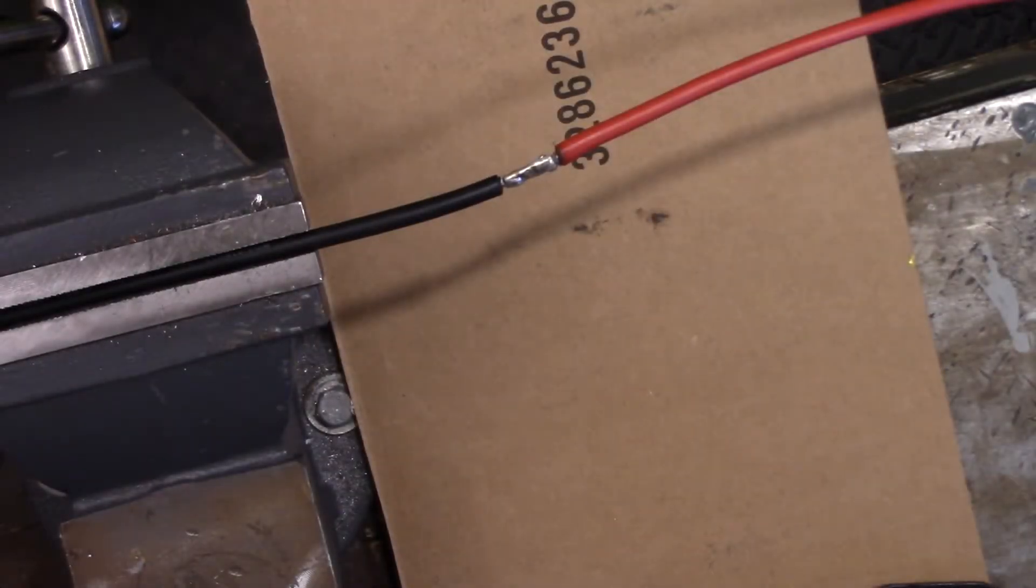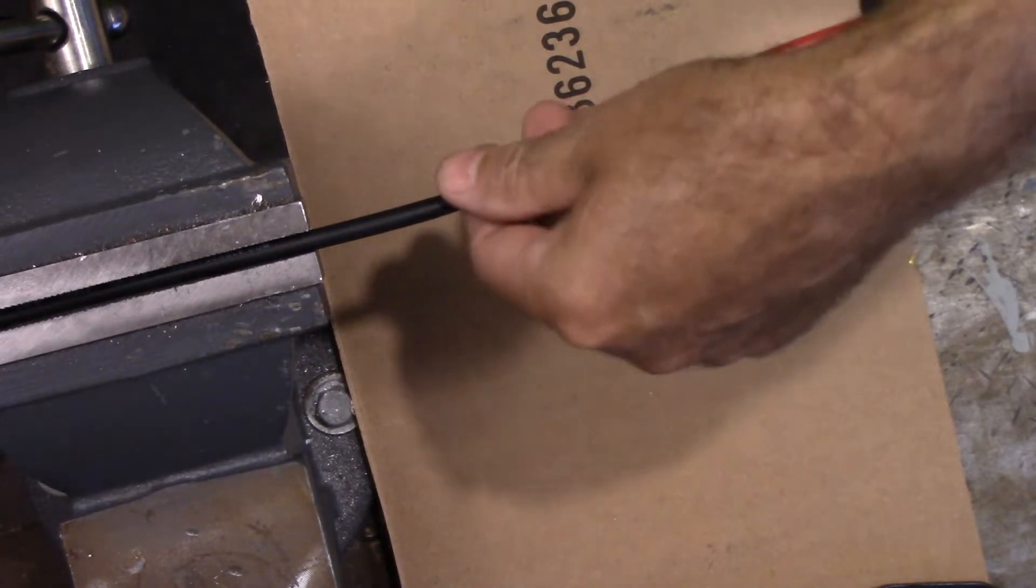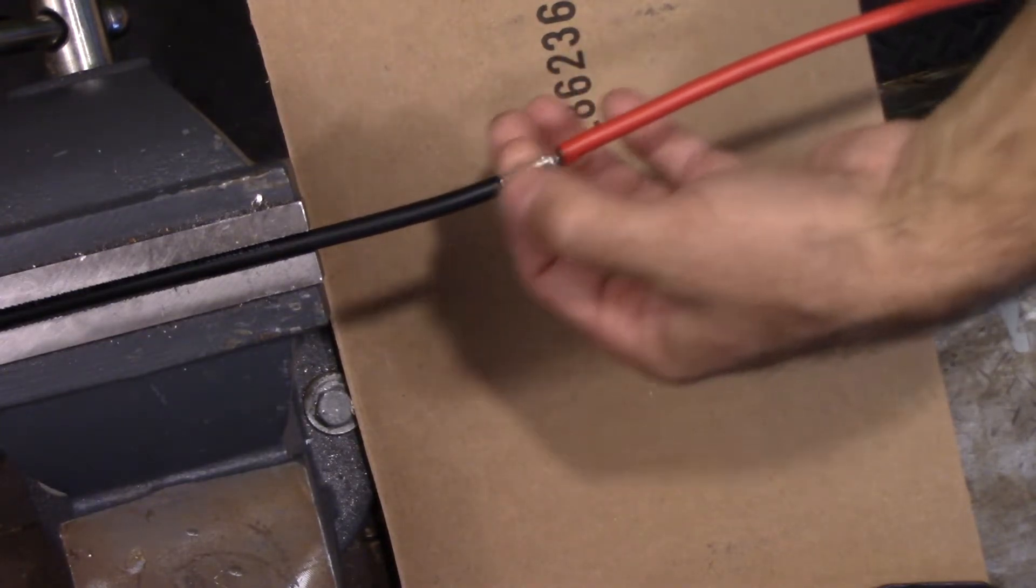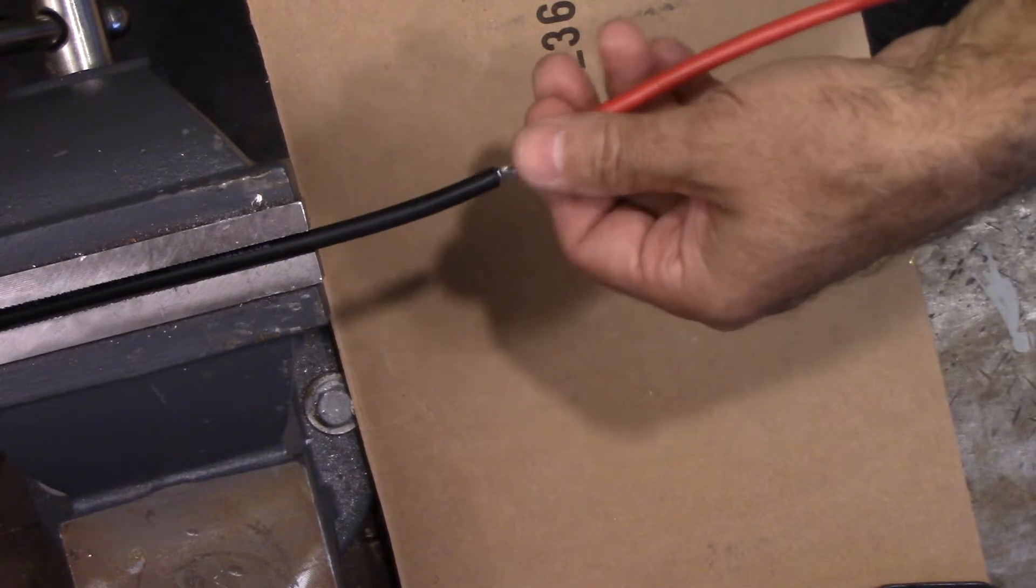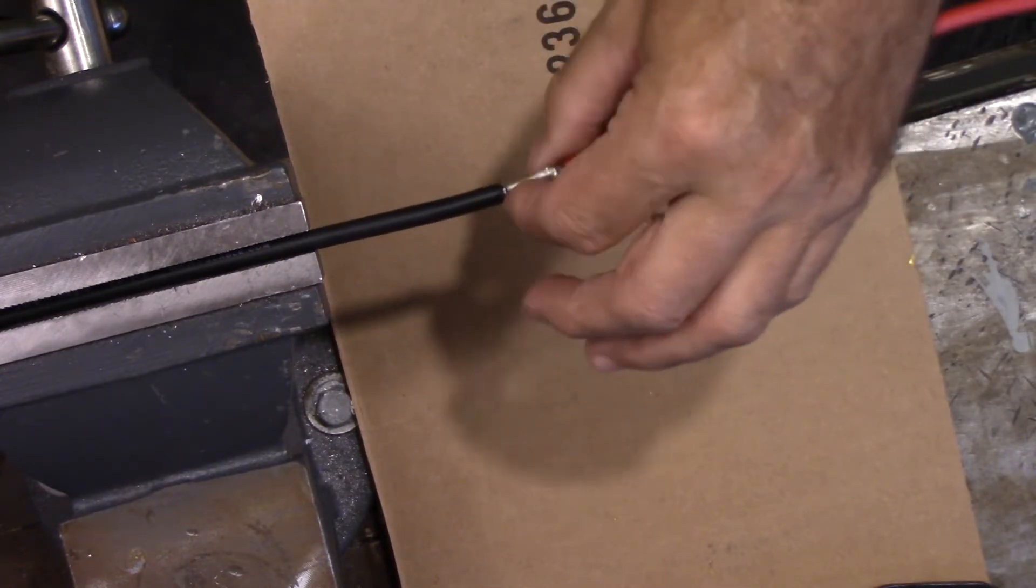Okay, this is about 10 minutes later. You have to make sure this is really cool to the touch. Because if you try and slide that shrink tubing up there, it'll start shrinking before you get to the other side. So you got to make sure it's completely cold. So that is a nice mechanical bond with the solder and of course the inside of the butt connector.